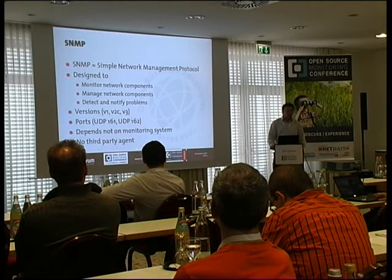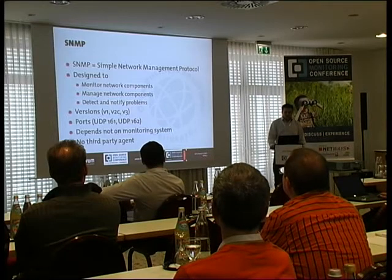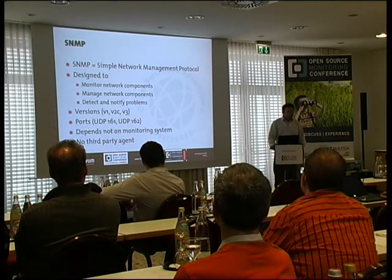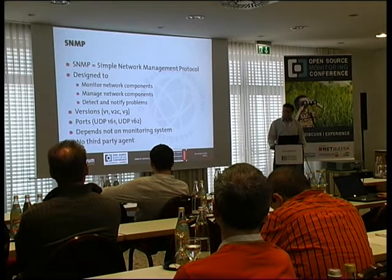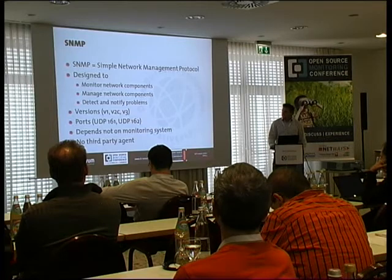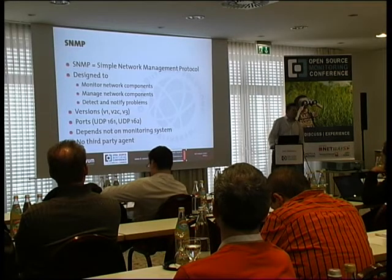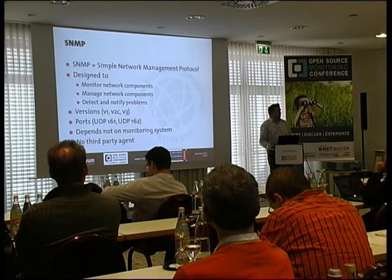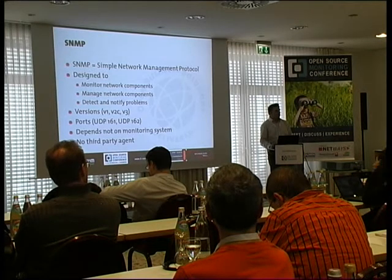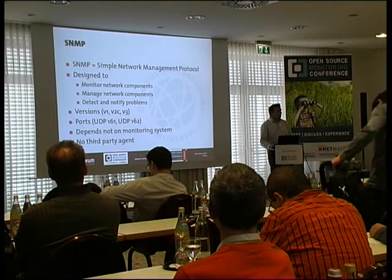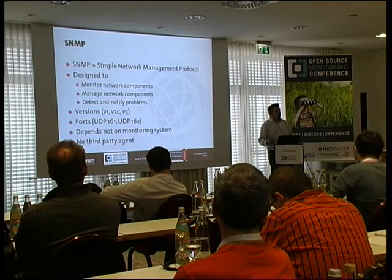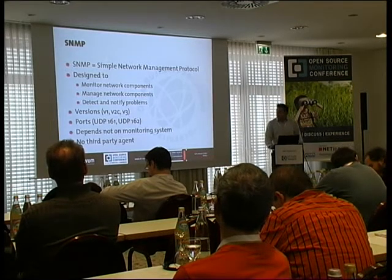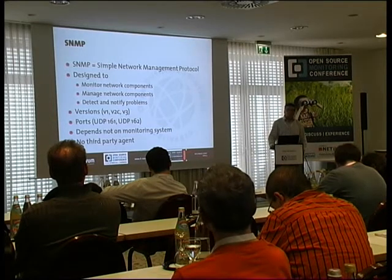There are three versions: V1, V2, V3. The ports are UDP 161 to gather information, and 162 to receive information as an SNMP trap. The big benefit of SNMP is it doesn't depend on the monitoring system. So if you have more than one monitoring system — for example, you use Nagios and OpenNMS — you don't have to install NAPE and SNMP. You only configure SNMP once, gathering information for both Nagios and OpenNMS. It's no third-party agent, so it's pretty cool to use.